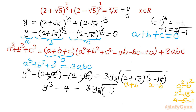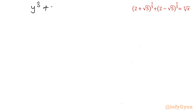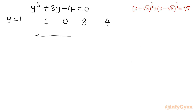So our equation becomes: y³ minus (2 + √5) minus (2 − √5) = −3y, which simplifies to y³ − 4 = −3y. Taking all terms to the left gives the cubic equation y³ + 3y − 4 = 0. We can see that y = 1 is one solution, so I will apply synthetic division.